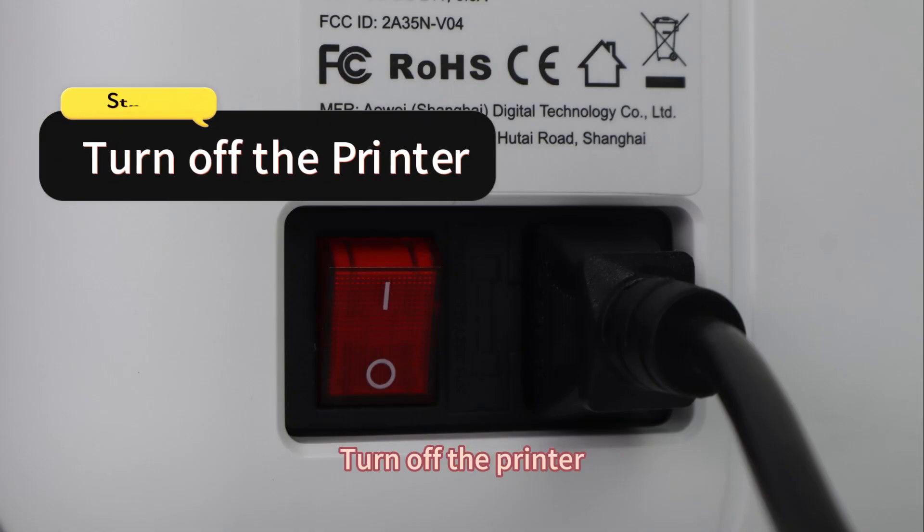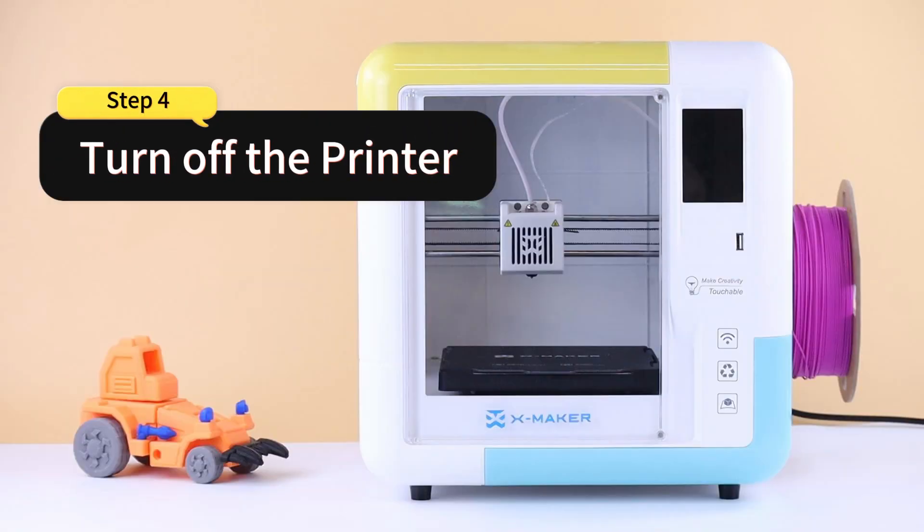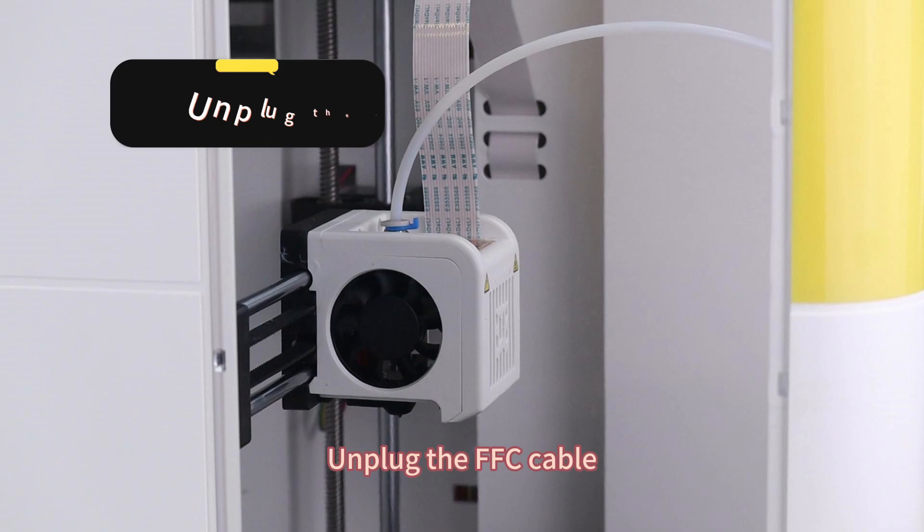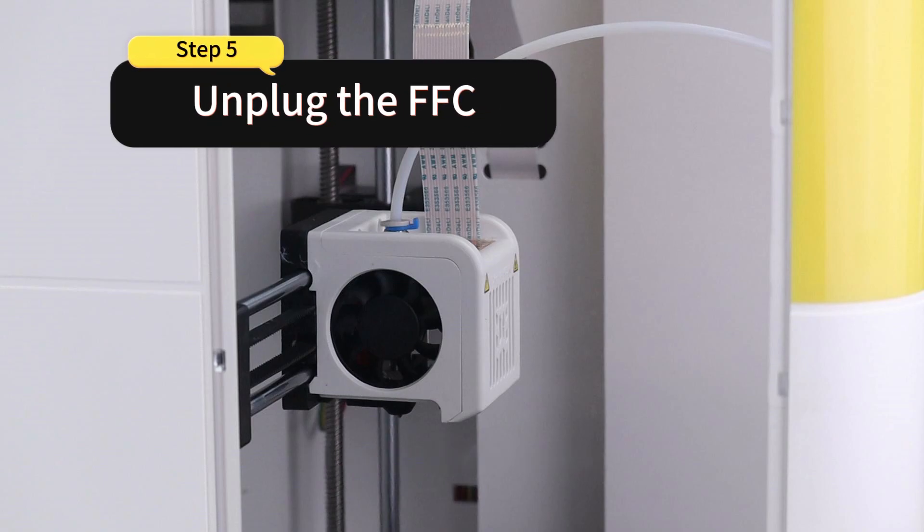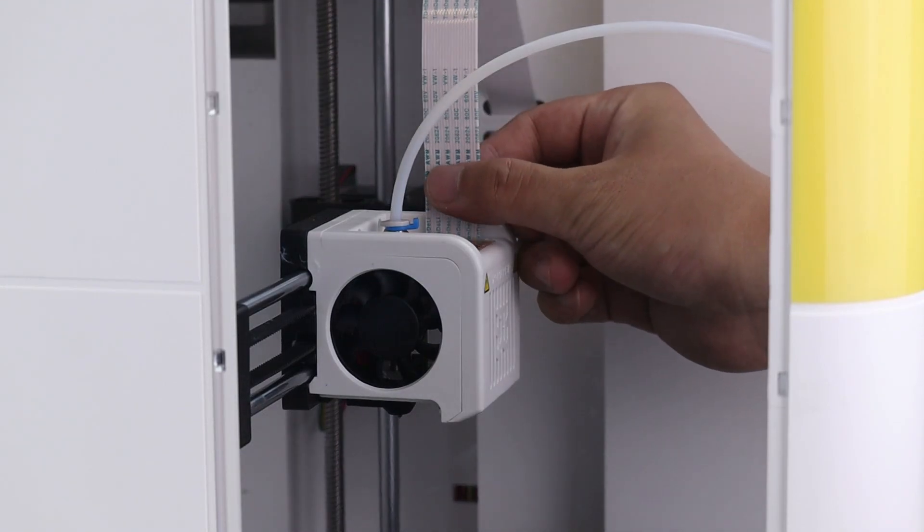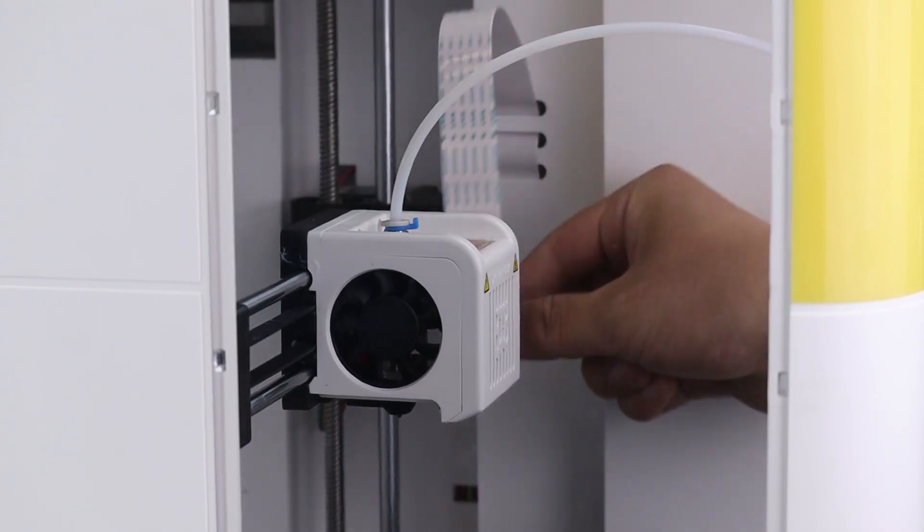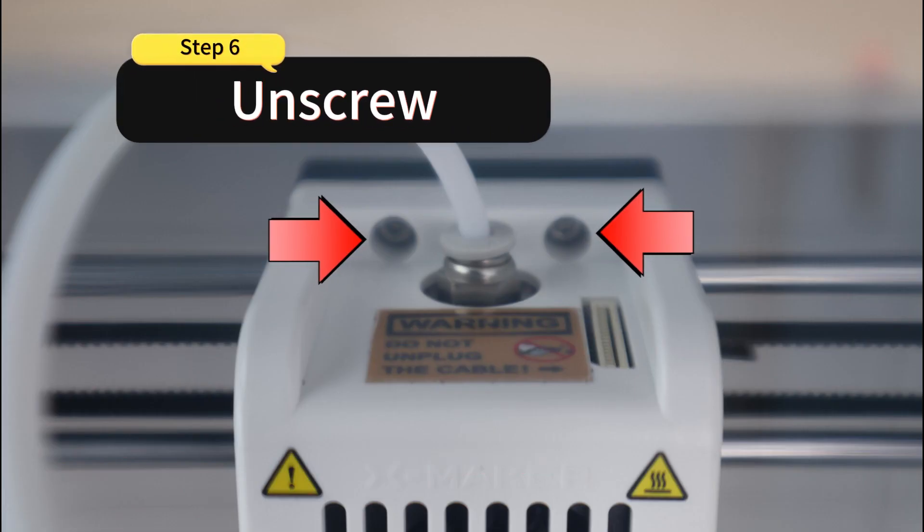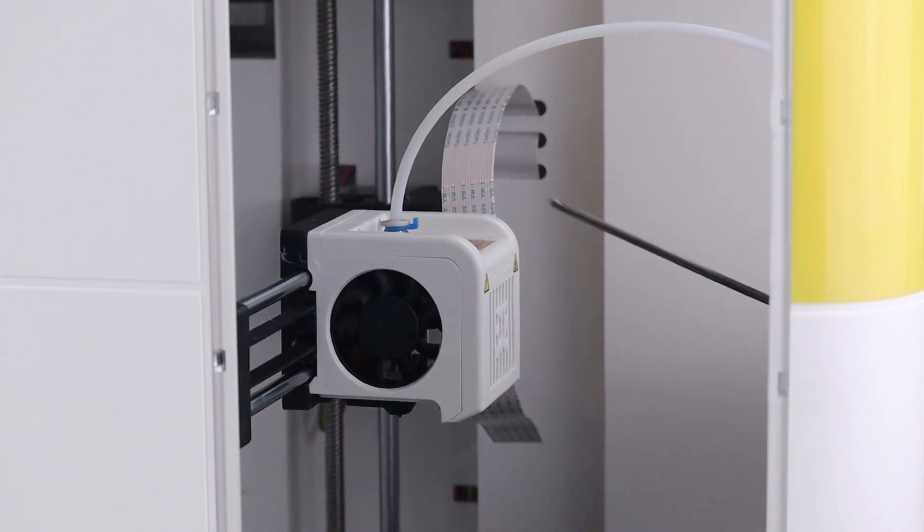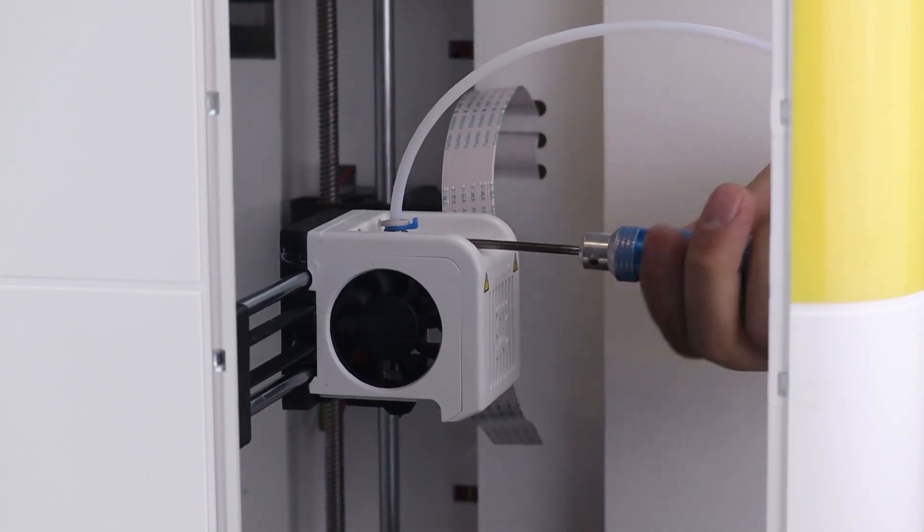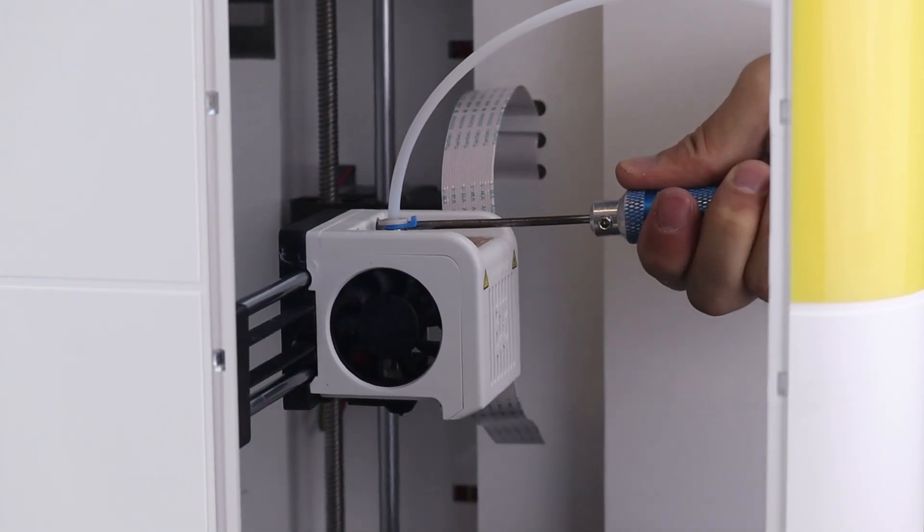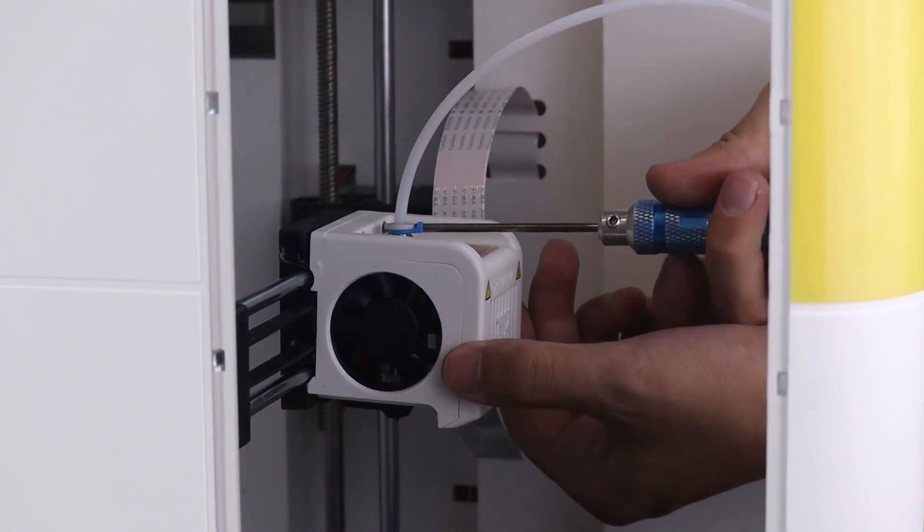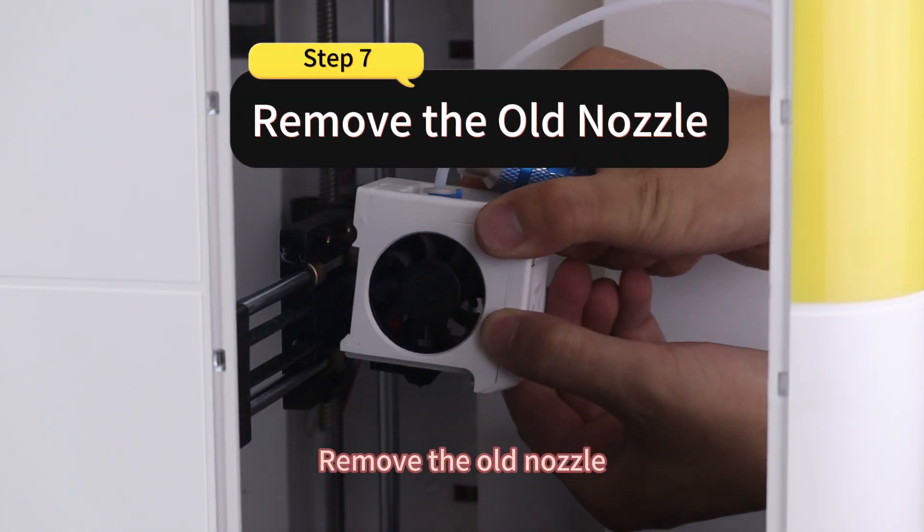Turn off the printer. Unplug the FFC cable. Then unscrew and remove the old nozzle.